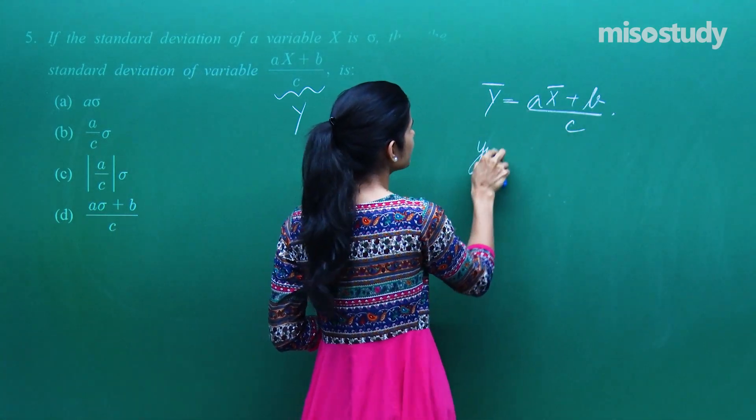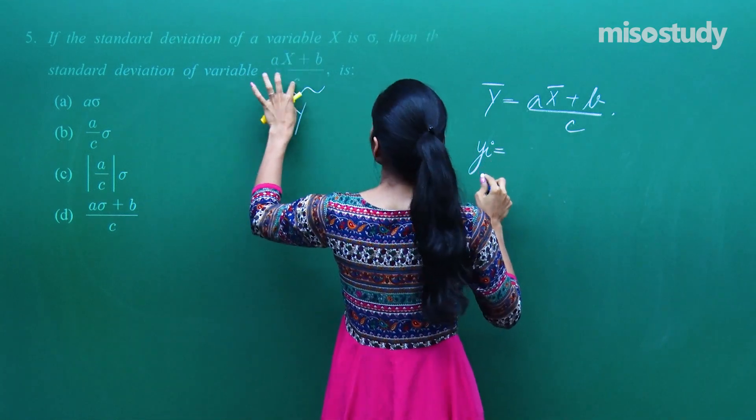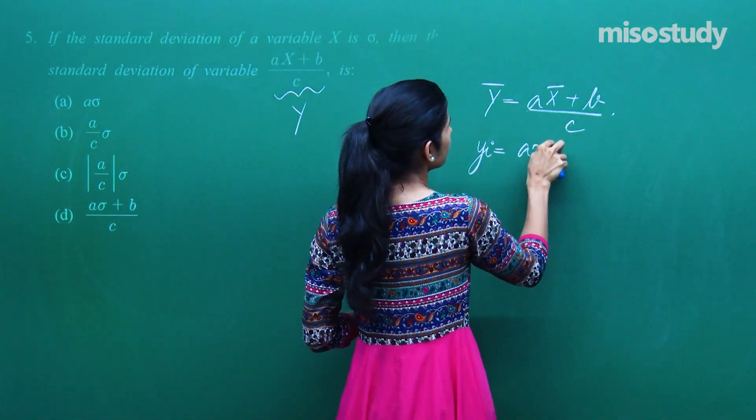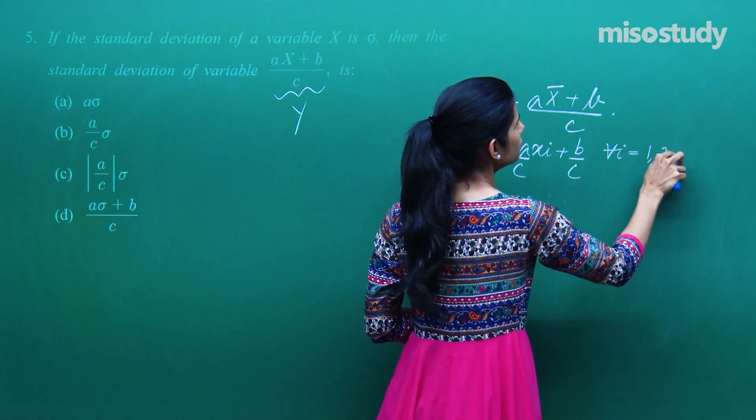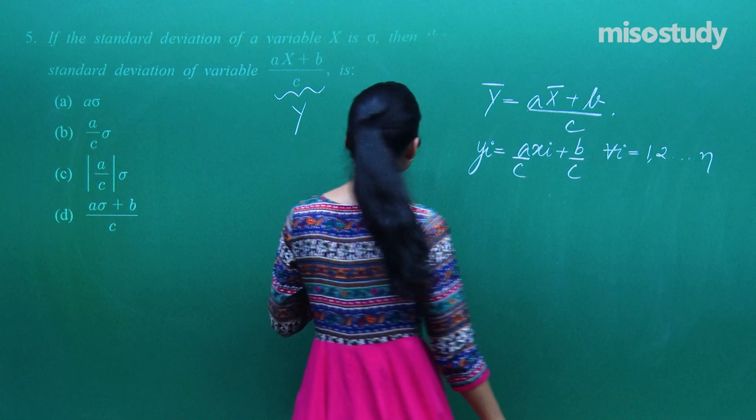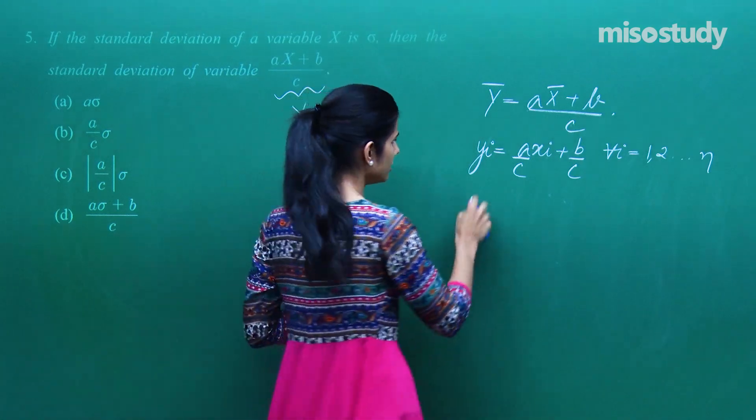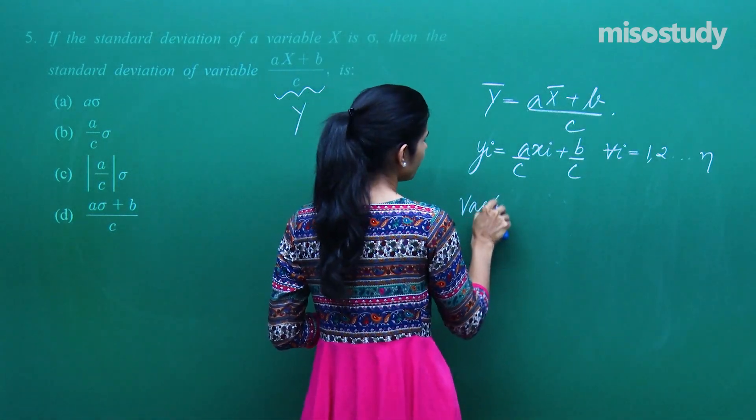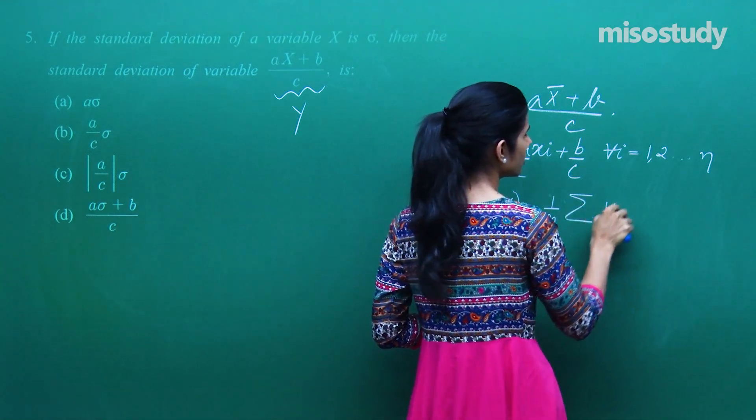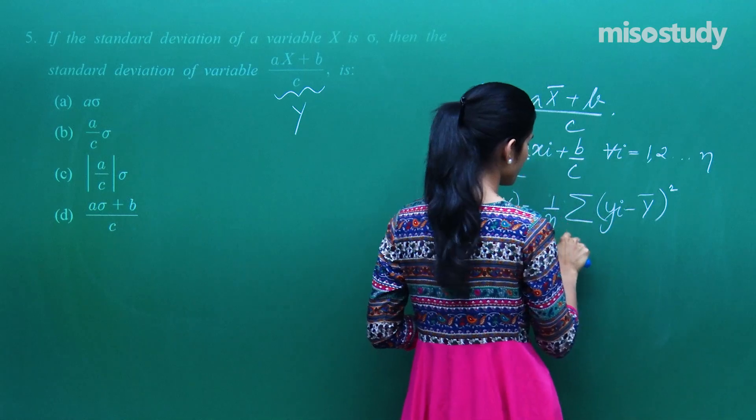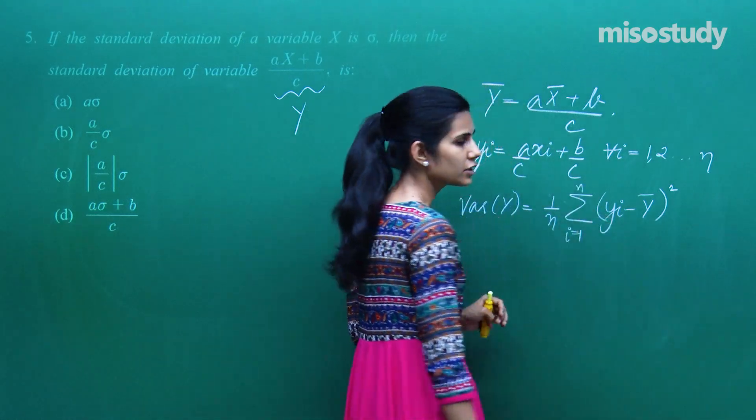And obviously, yi kiske barabar hai? axi plus b by c for all i varying from 1 to n. Mujhe standard deviation ke baare mein batana hai. Agar mein variance of y consider karu, toh wo aega 1 by n summation yi minus y bar ka whole square, i going from 1 to n.